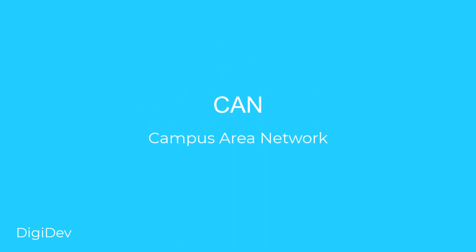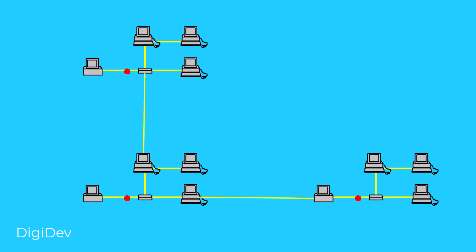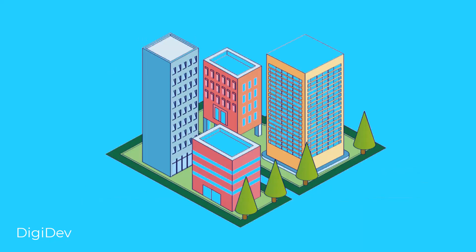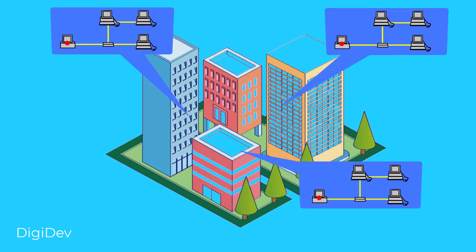Next, we have CAN, which stands for Campus Area Network. A Campus Area Network is created when we connect a bunch of LANs together. For example, in your university or high school, you have a bunch of buildings and each building has its own LAN system with all computers connected together. When we connect these buildings together, we create a Campus Area Network.